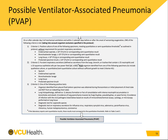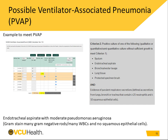Once a patient meets criteria for IVAC, they are reviewed for meeting PVAP. This is a culture-based criterion. They must meet one of the following qualifiers: one, have a positive culture from an endotracheal aspirate, BAL, lung tissue, or protected specimen brush meeting quantitative thresholds; or two, purulent respiratory secretions plus a positive culture from a sputum, endotracheal aspirate, BAL, lung tissue, or protected specimen brush; or have one of the following positive tests: organism from pleural fluid, lung histopathology, a diagnostic test for Legionella, or a diagnostic test on respiratory secretions for a viral pathogen. In this example, the patient meets IVAC criteria and has an endotracheal aspirate with moderate Pseudomonas aeruginosa, and the gram stain had many gram-negative rods, many white blood cells, and no squamous epithelial cells.